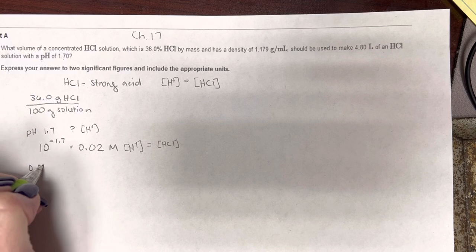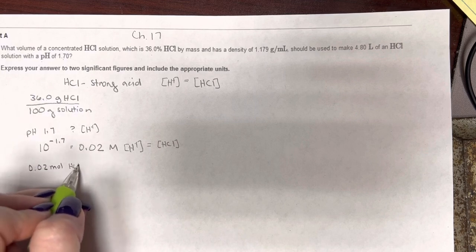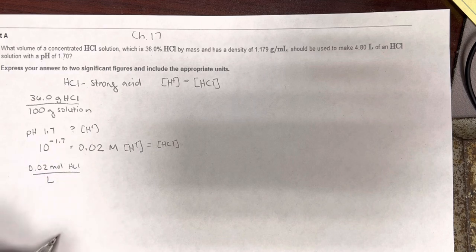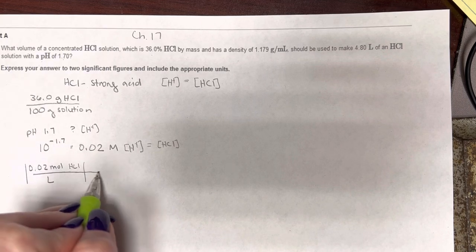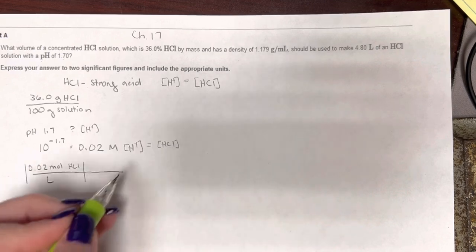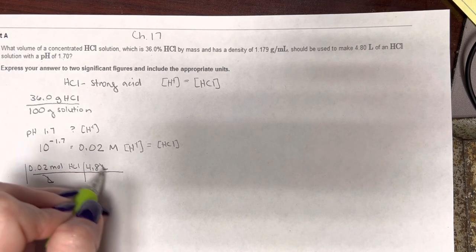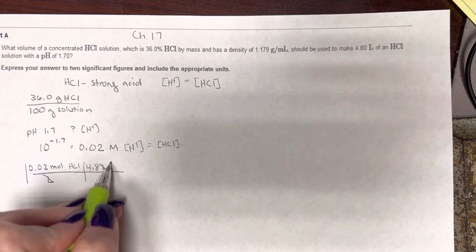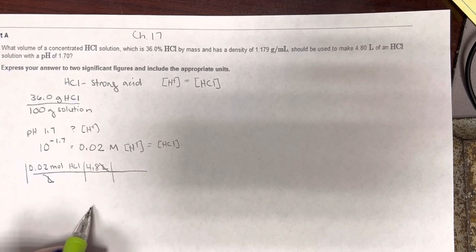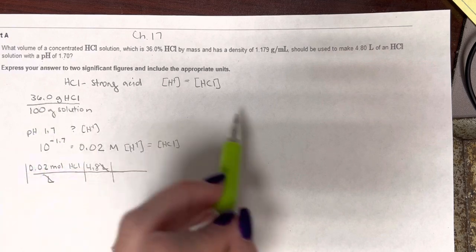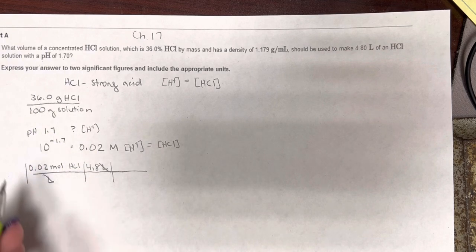We have 0.02 moles of HCl per liter. We want to make 4.8 liters. So that tells us how many moles of HCl we're going to need. Well, I got grams and stuff, so why don't I go to grams?